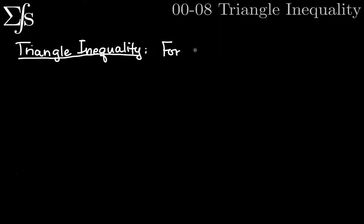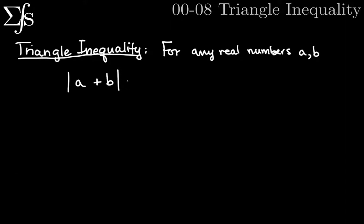For any real numbers A and B, the absolute value of A plus B — the absolute value of this sum — is going to be less than or equal to the sum of their absolute values individually. The absolute value of A plus B is less than or equal to the absolute value of A plus the absolute value of B. I'll do an example to make you feel comfortable that it should be less than or equal to.